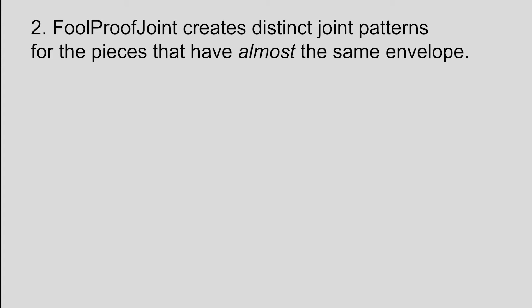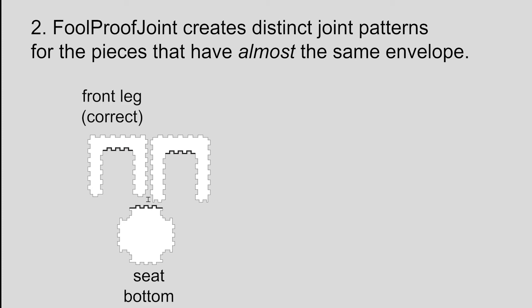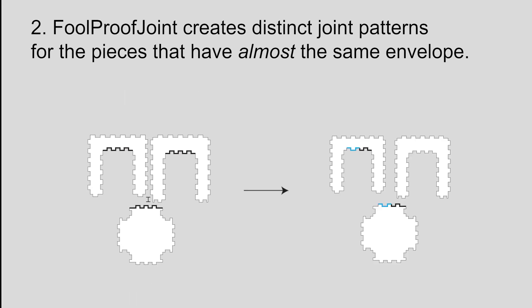After that, FoolProofJoint creates distinct joint patterns for pieces that have almost the same envelope. For example, the front leg piece should be assembled to the sit-bottom piece, but can accidentally assemble to the backrest piece, which just happens to have a similar envelope. FoolProofJoint resolves this by making the two joint patterns distinct, preventing the incorrect piece from being assembled.